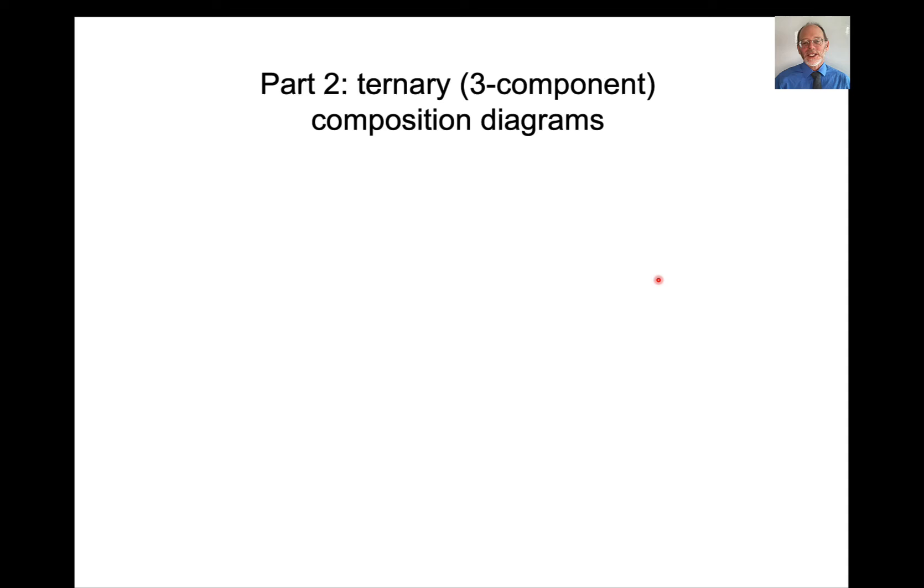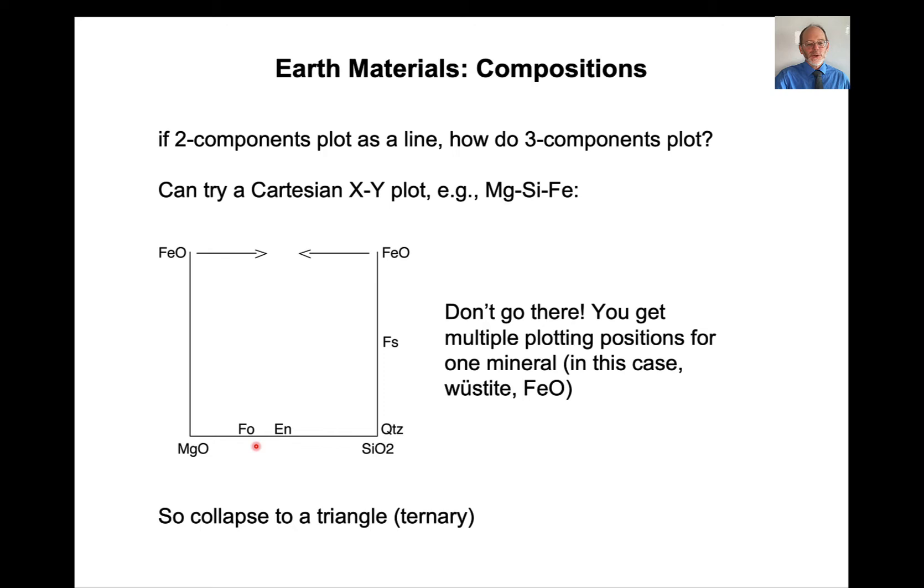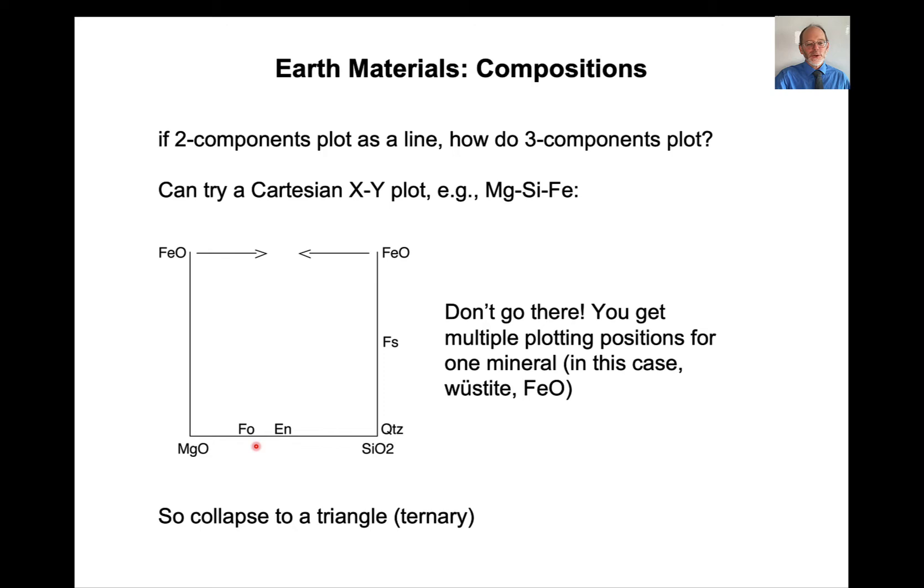So that's binary composition diagrams. Ternary composition diagrams, where do we go from there? Well, if you think about it, if we have two components on an x-axis, it seems like we can just add a vertical axis, right? We can have another component, let's make it FeO here. The problem with that is that this is 100% MgO, and as we go up in this direction, we're getting more and more FeO. But the same thing has to be true over here. As we go up in this direction, we're getting more and more FeO until we have 100% FeO and 100% FeO on these two different axes. So that's kind of a problem. So what we do is we simply say, this point and this point are actually the same, and we bring them together to a single point. This becomes our pure FeO composition, and we end up with a triangle.